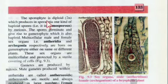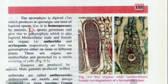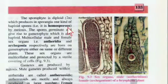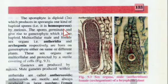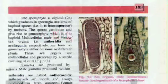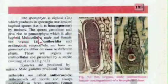The sporophyte is diploid and produces in sporangia one kind of haploid spores — it is homosporous, because only one kind of spore is produced. If different kinds were produced it would be heterosporous. These spores germinate and give rise to the gametophyte, which is also haploid.